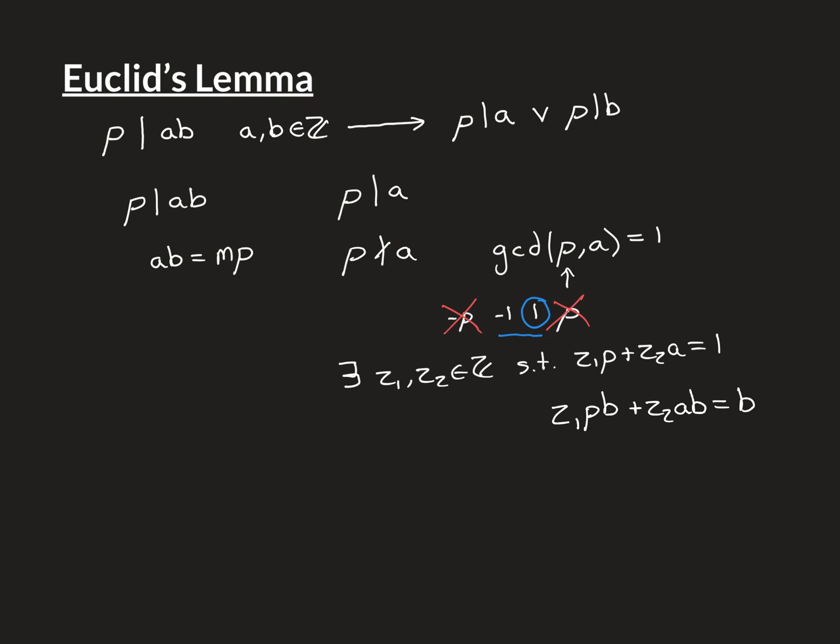And now, I'm going to use my starting assumption that AB is divisible by P, and therefore replace AB here with M times P. And we've then got Z1, and I'm just going to reorder things slightly using commutativity of multiplication. So Z1 times B times P plus Z2 times M times P is equal to B.